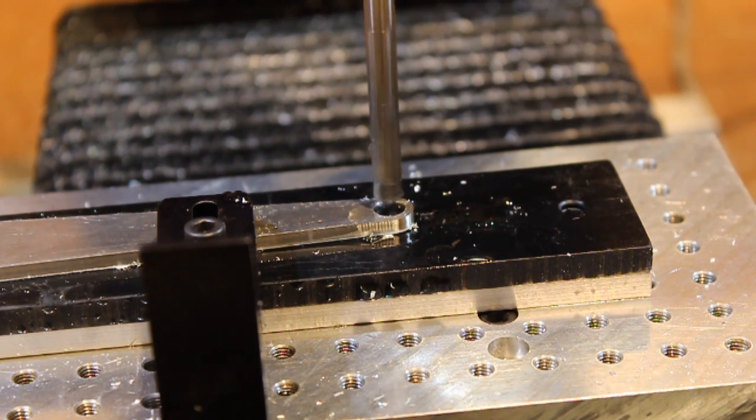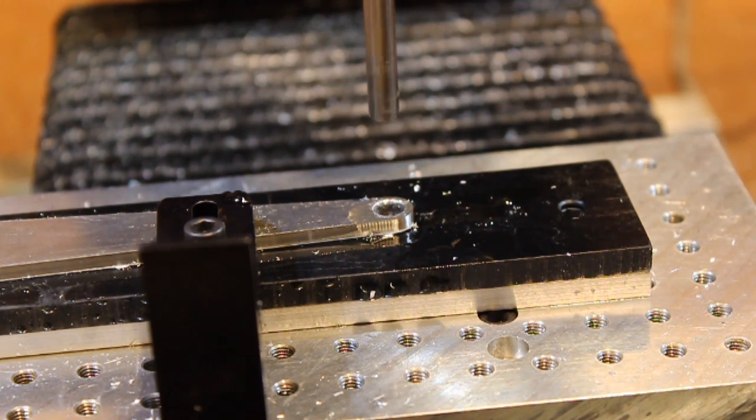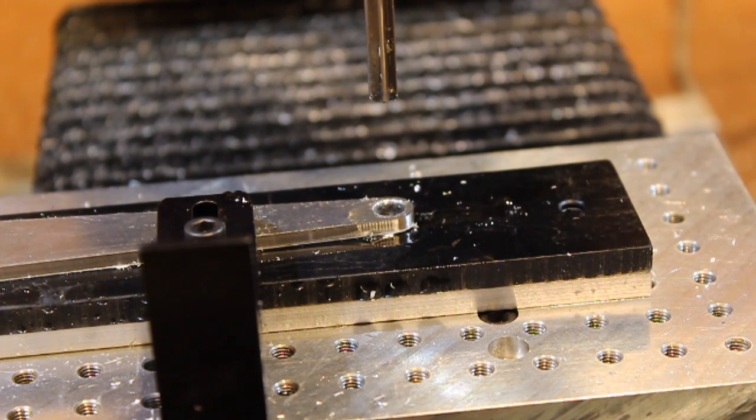When that's done, that hole will be exactly 0.250. Since the other piece that has to be press fit in there is just a thousandth larger, once I press it in it'll stay there.